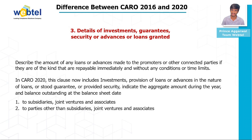Clause three covers details of investments, guarantees, security, or advances or loans granted. In CARO 2020, this clause now includes investments, provisions of loans or advances in nature of loans, guarantees, or security provided — with the aggregate amount during the year and balance outstanding at the balance sheet date — to subsidiaries, joint ventures, and associates, as well as to parties other than subsidiaries, joint ventures, and associates.